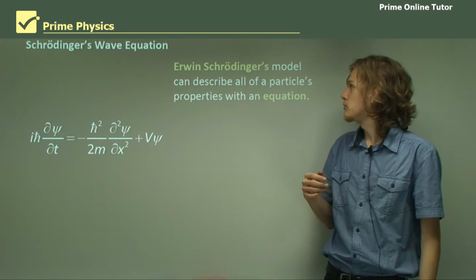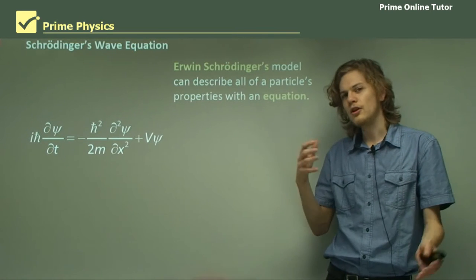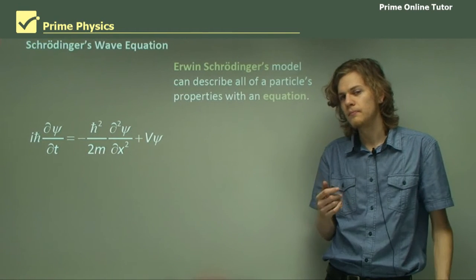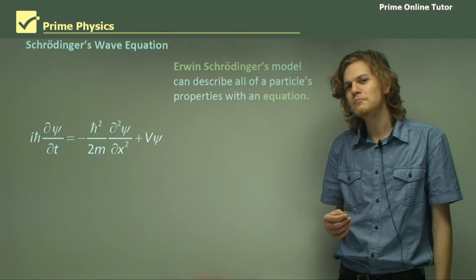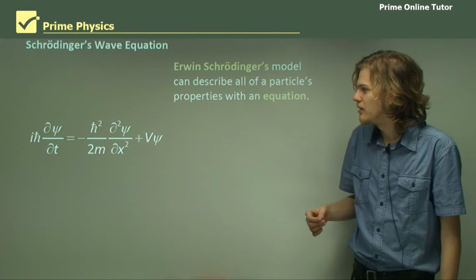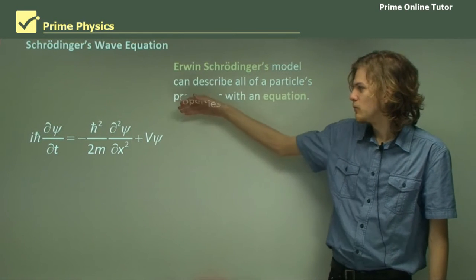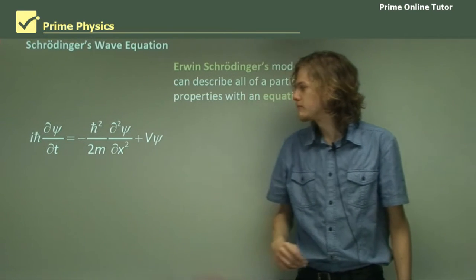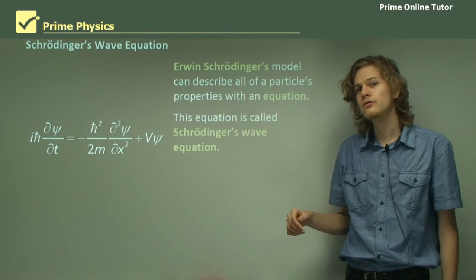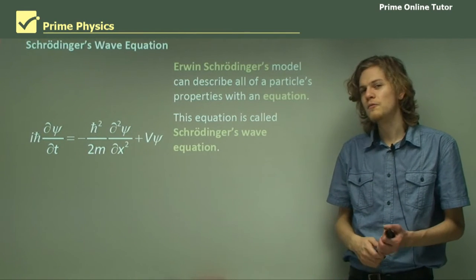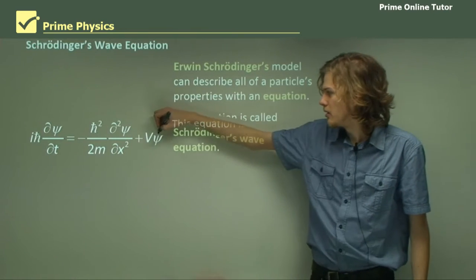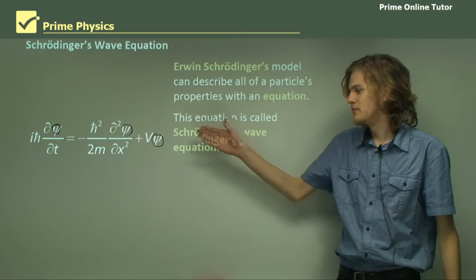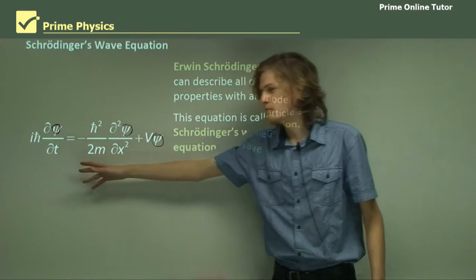We'll look at Erwin Schrödinger's model first. His model uses wave equations to describe particles' properties. We can see here, if you've done any wave mathematics, that this is in the form of a wave equation. We have a derivative here of a position and a derivative of time. This equation is called Schrödinger's wave equation. If we were working with y as the variable, then it would appear here, here, and here. That means we're actually taking the derivative with respect to two different things — one with time and one with position.